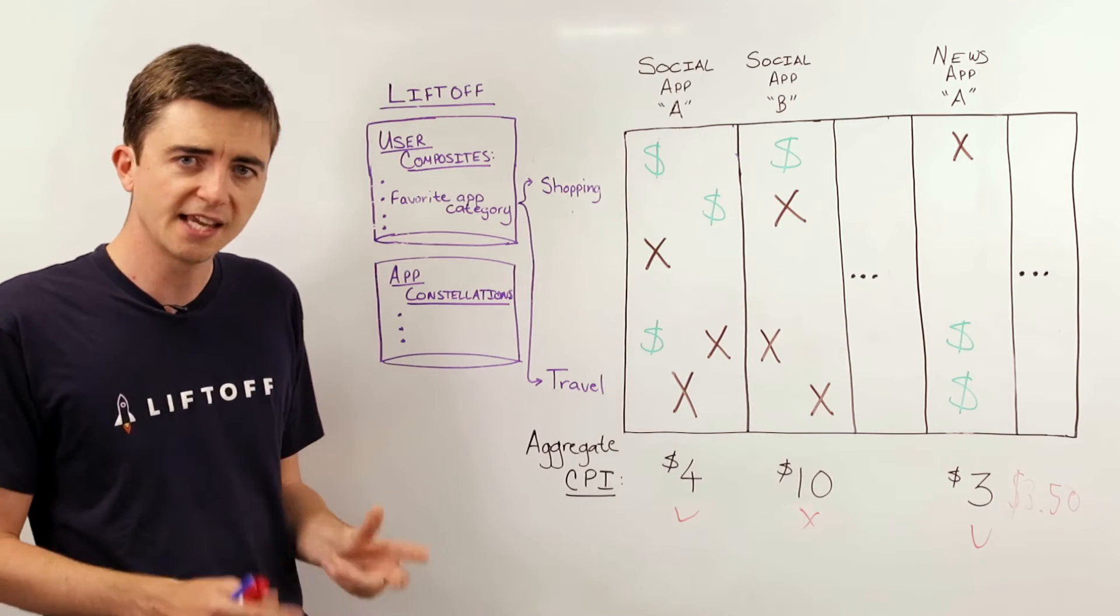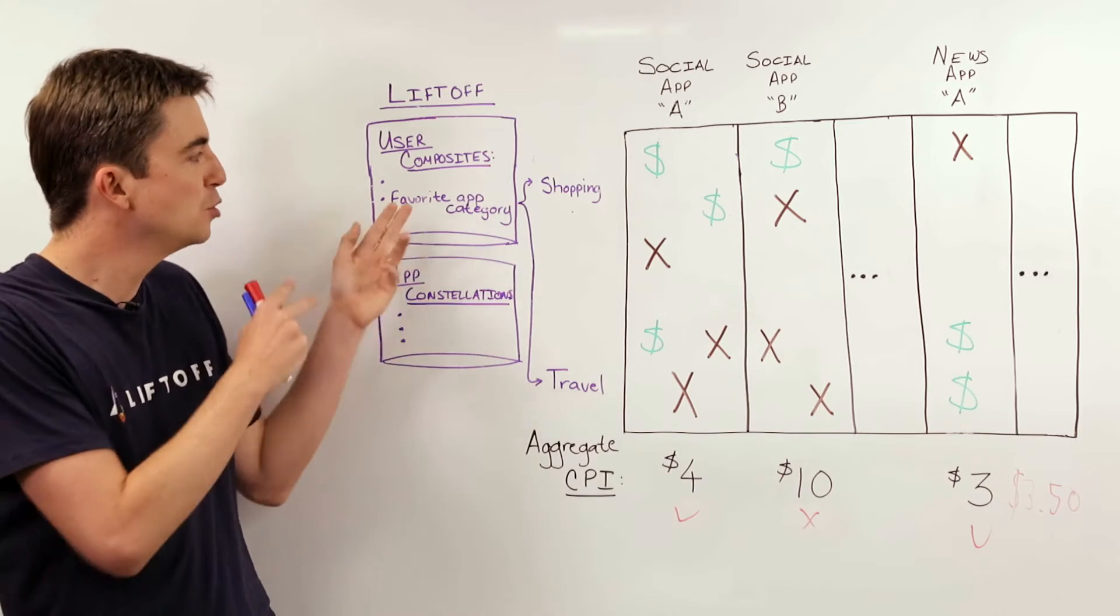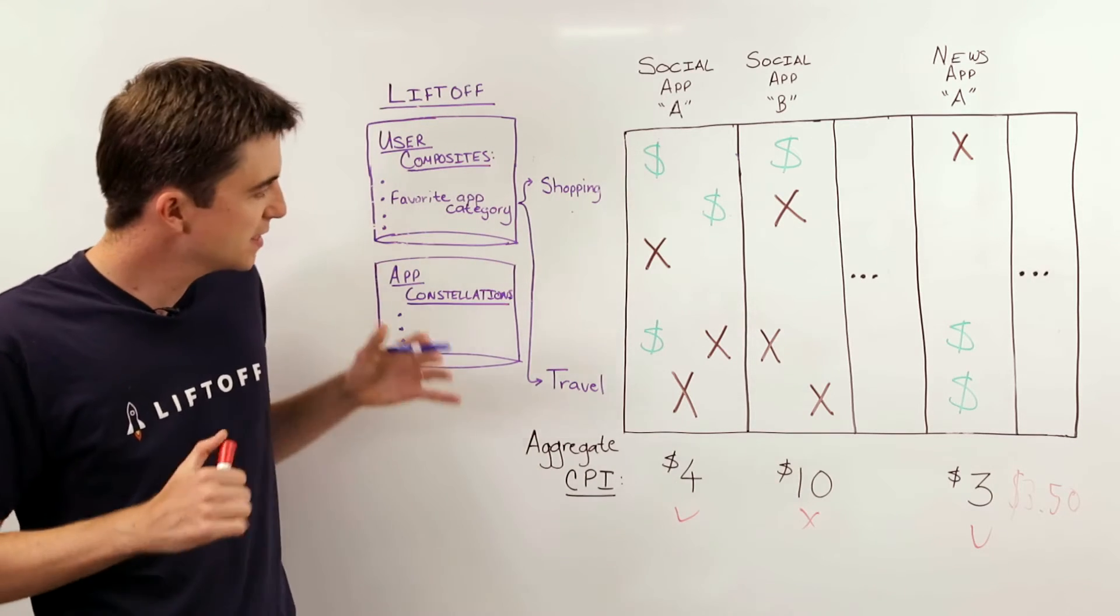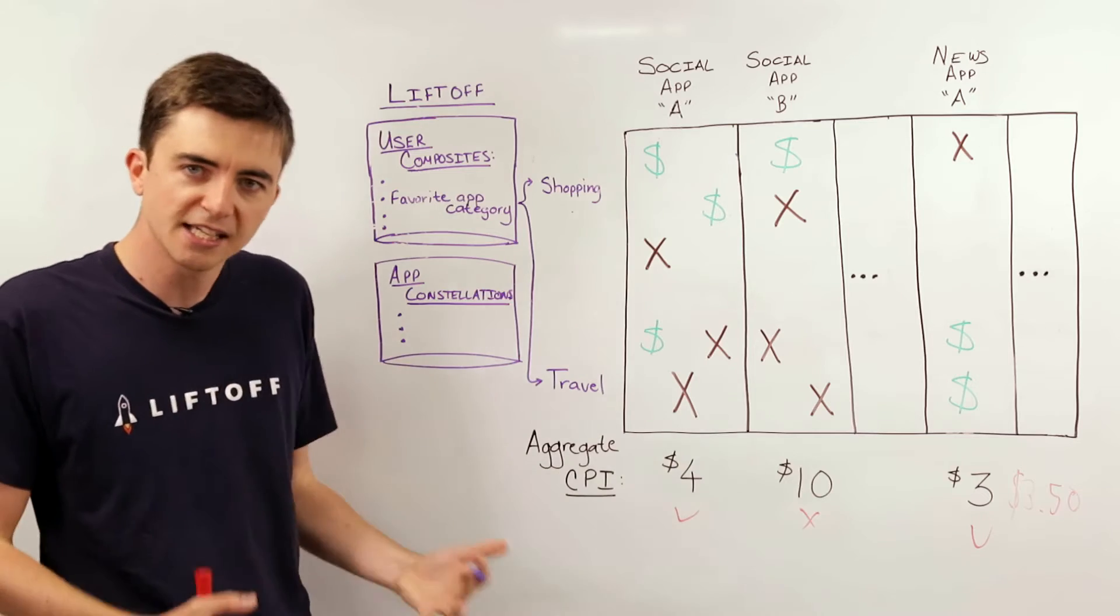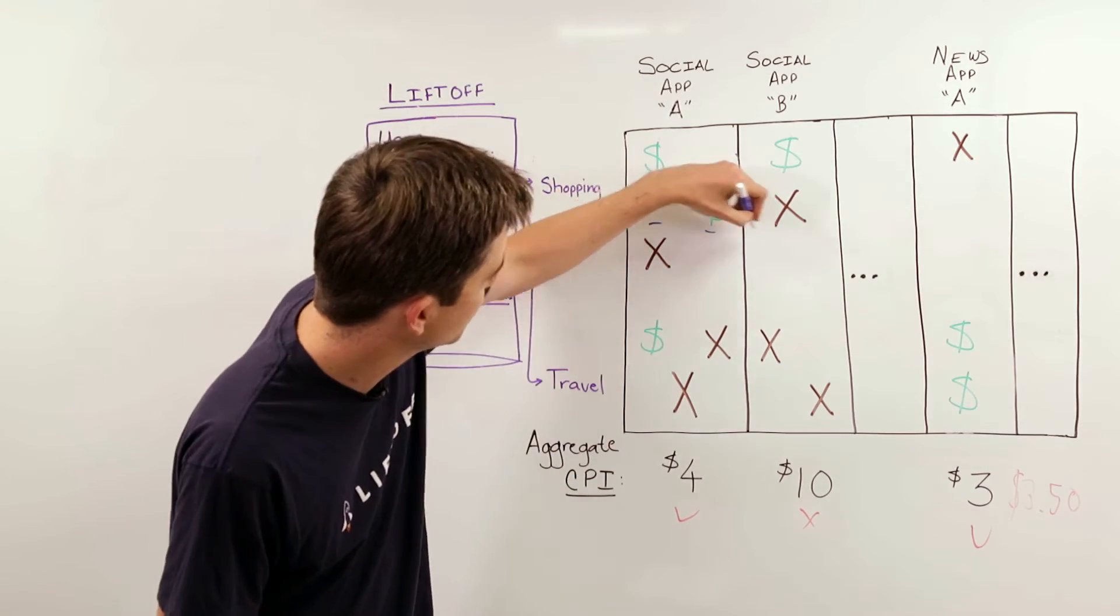Now, to give you an example of why that's the case, let's take just one signal from our user composites, the user's favorite application category, for example. Now, this characteristic allows us to slice the inventory we have access to in a different way by leveraging the user's favorite category.